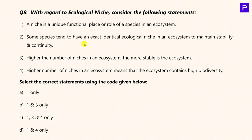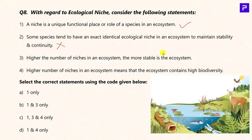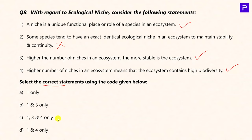Question 7: With regard to ecological niche, consider the following statements. Statement 1: A niche is a unique functional place or role of a species in an ecosystem — True. Statement 2: Some species tend to have an exact identical ecological niche to maintain stability — False; a niche is always unique to a single species. Statement 3: Higher the number of niches in an ecosystem, the more stable the ecosystem — True, as the ecosystem is utilized by various species increasing stability and biodiversity. Correct statements are 1, 3, and 4.